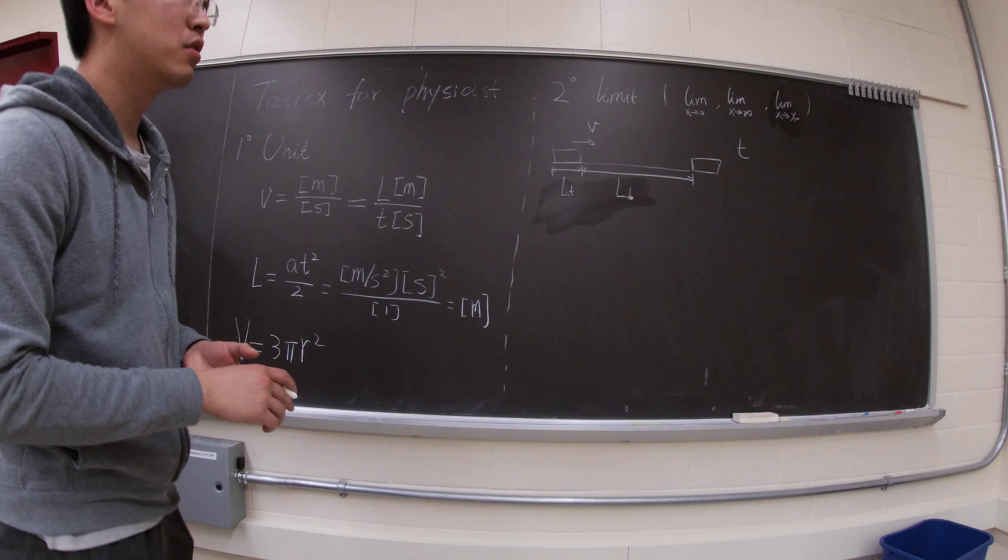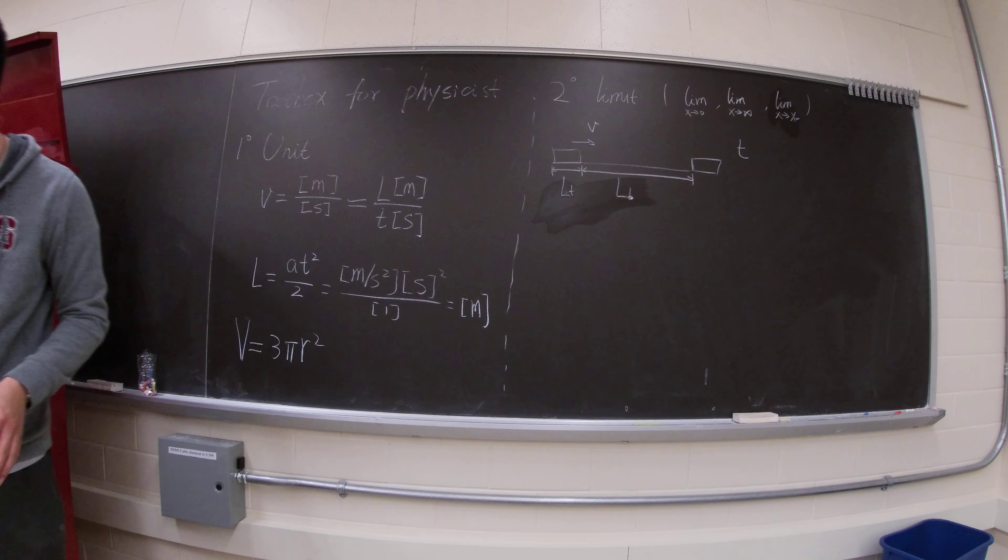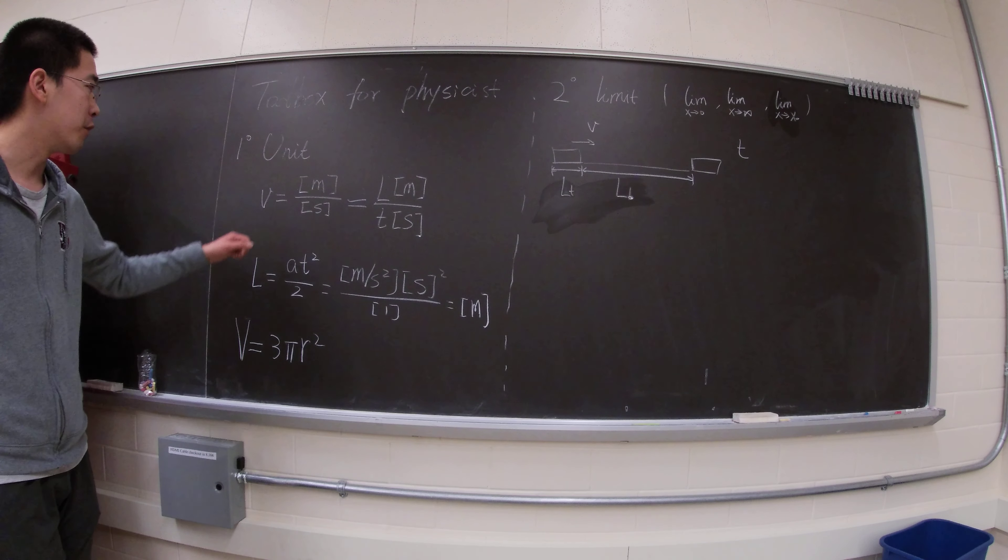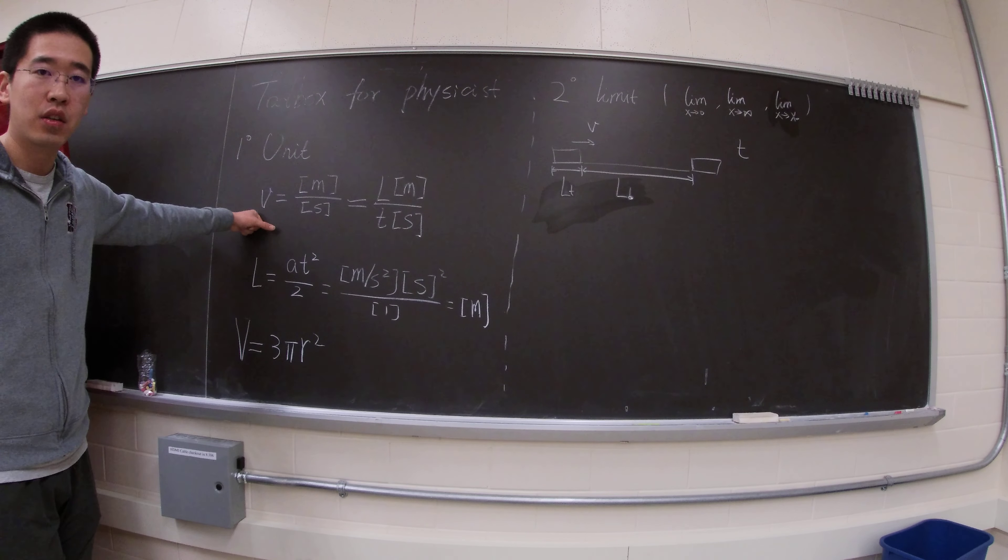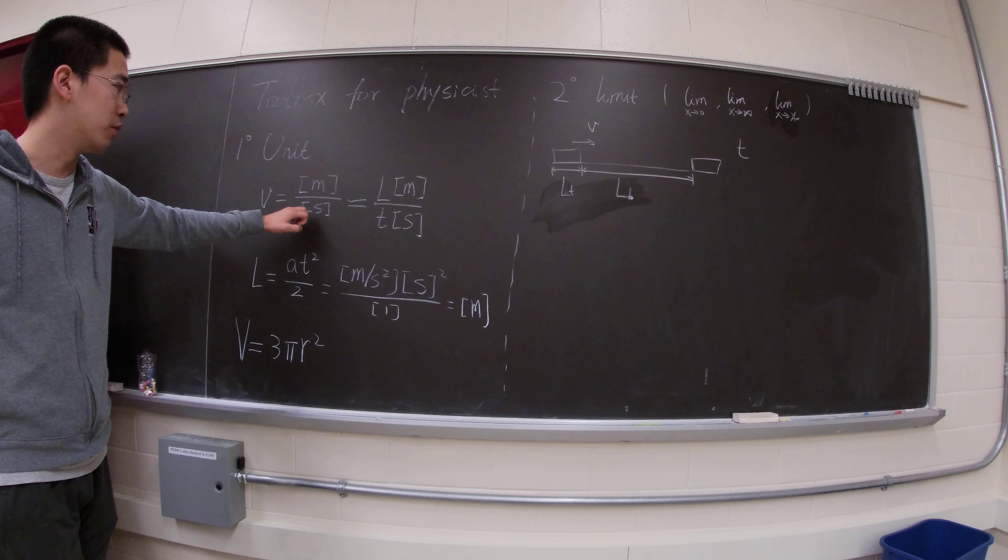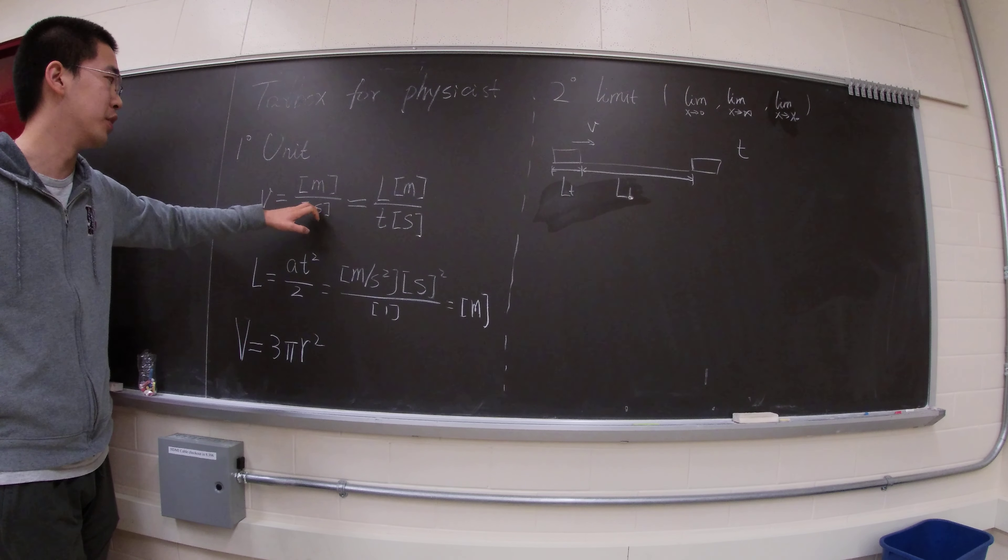So obviously unit is for most of the physical quantities, there's a lot of units associated with it. For instance, the velocity has a unit of a meter, like length over time, so meter per second.